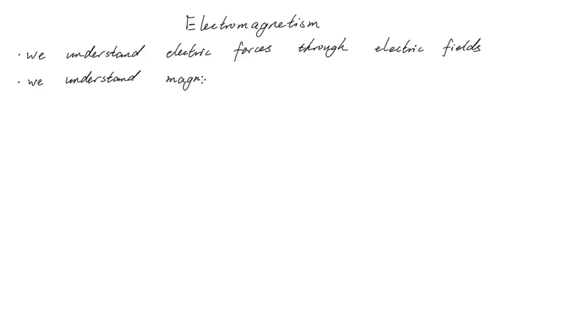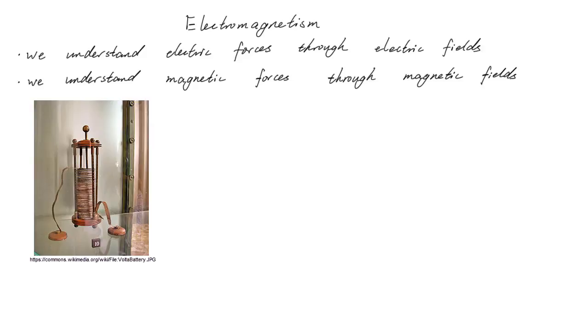So naturally our current understanding of magnetic forces is through magnetic fields. While humanity has been aware of electric and magnetic forces for a long time, not much progress in understanding these forces was made until the 19th century. Volta's pile gave us a reliable way of producing electricity at the beginning of the 19th century in 1800. This opened up the door to test for the relationship between electricity and magnetism.